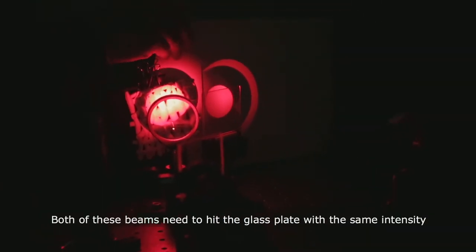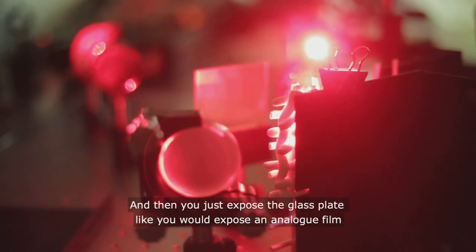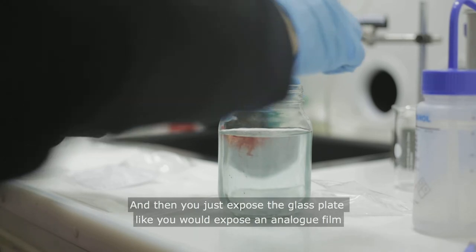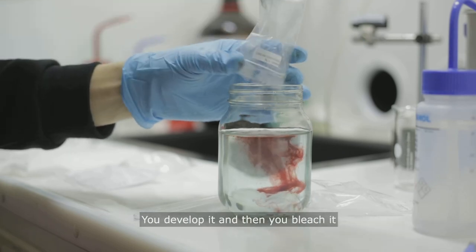The tricky part is that both of these light beams need to hit the glass plate at exactly the same intensity. And then you just expose the glass plate like you would expose a normal analog film and you use a similar development process. You develop it and then you bleach it.